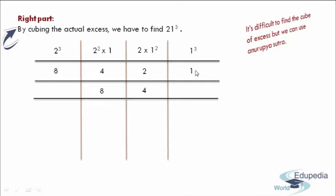Here we don't have any other digits to add, so we write 1 itself. And if you add the numbers 2 and 4, you get 6. And 4 and 8, you get 12. And finally here, we don't have any other numbers to add with this 8, so you have to write 8 as it is.